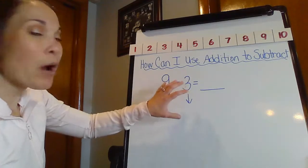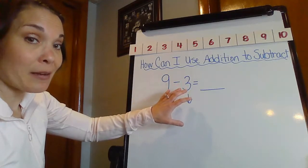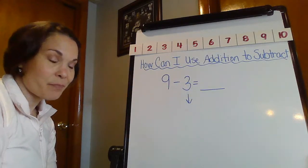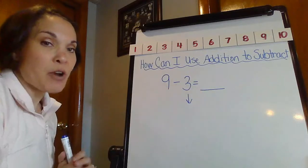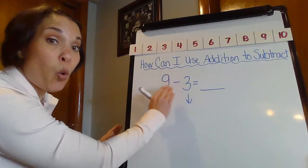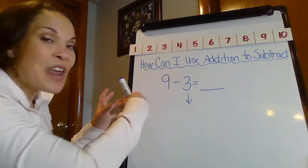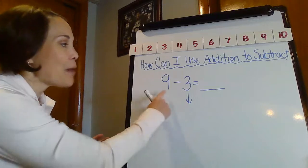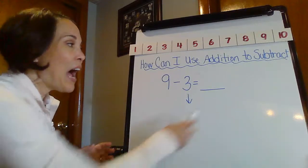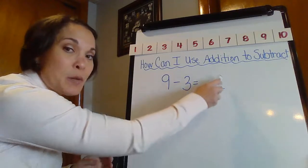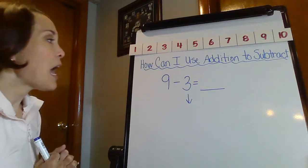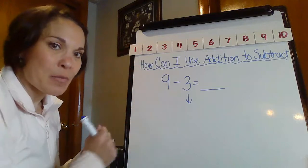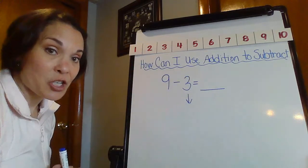I'm going to figure out what kind of number sentences can I make that is related to this particular number sentence. Because when I look at this subtraction number sentence, I see 9. That is my whole piece. I am taking away from that number. This is a part of it. I'm taking away the 3. I got to figure out what that missing part is. So I'm going to make an addition number sentence where I'm going to find that missing part to help me make that connection here.